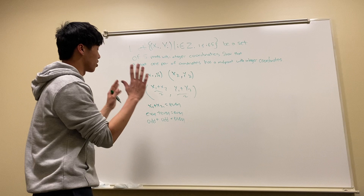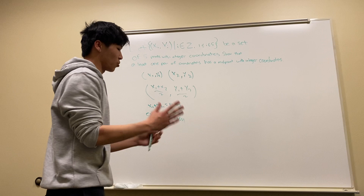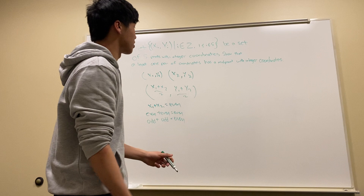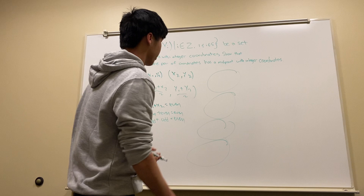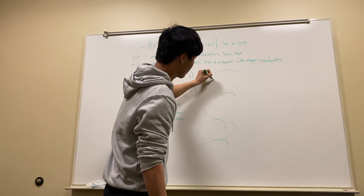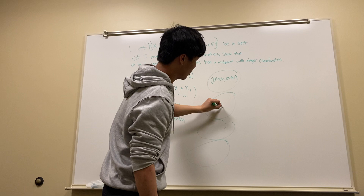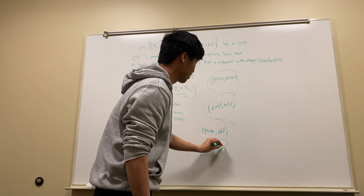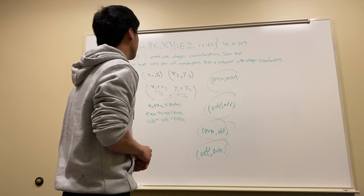So we're looking at the parities of our coordinate points. Each coordinate point has two values, an x and a y, and each value can be either odd or even. Two times two is four, so we have four cases a coordinate point can fall under: x and y both even; x and y both odd; x even and y odd; or x odd and y even. So we have four categories that a coordinate point could fall under.